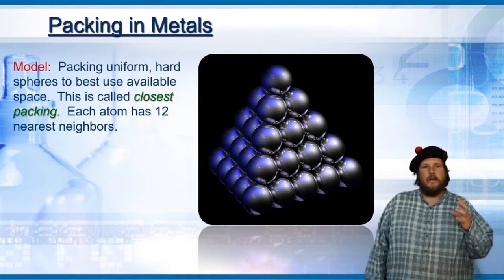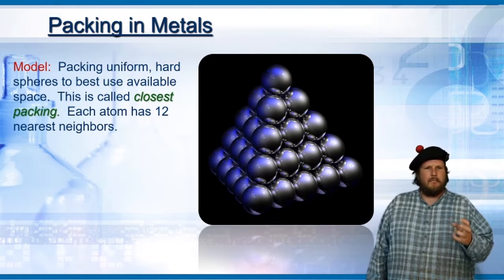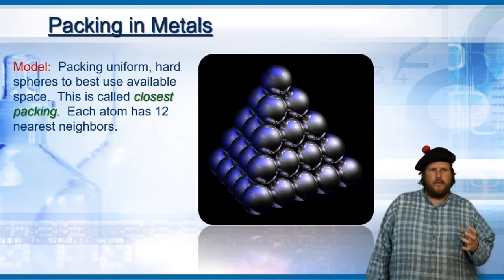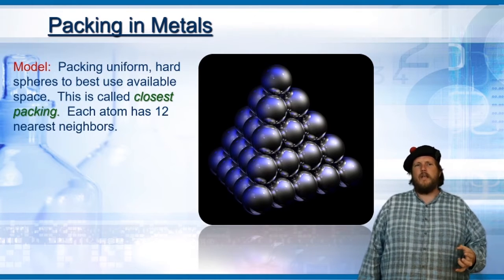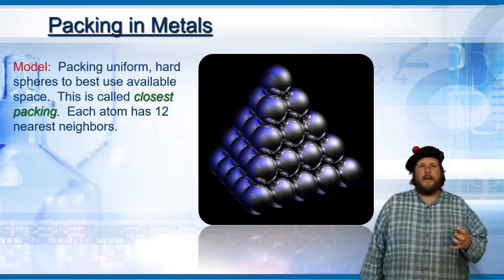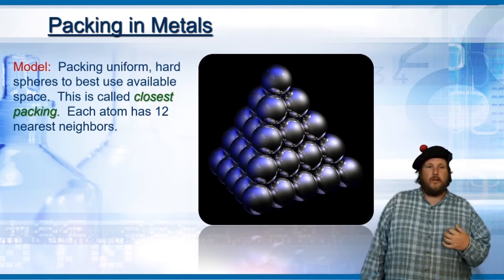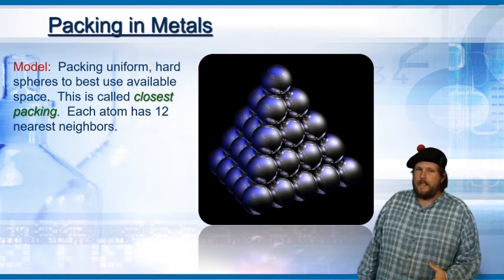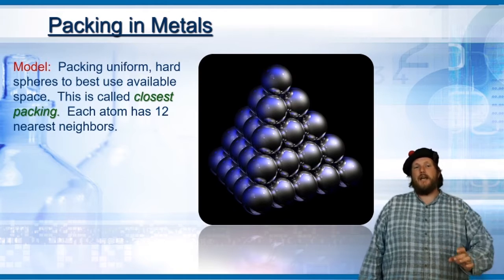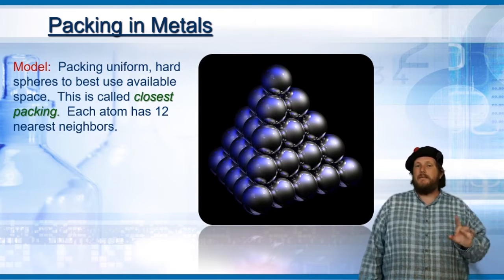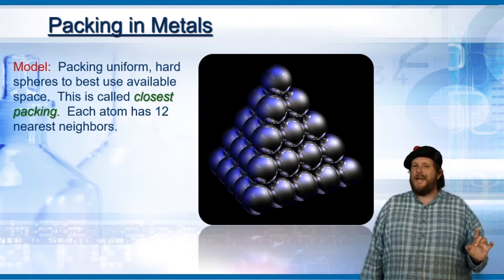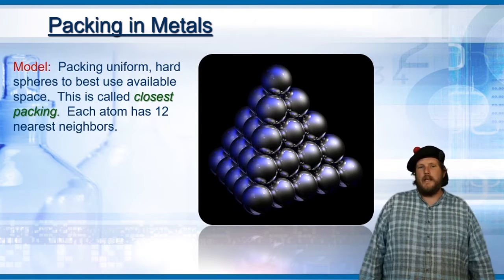Metals tend to pack in uniform hard spheres to best use the available space. It's called closest packing, where each atom has 12 nearest neighbors that it contacts.